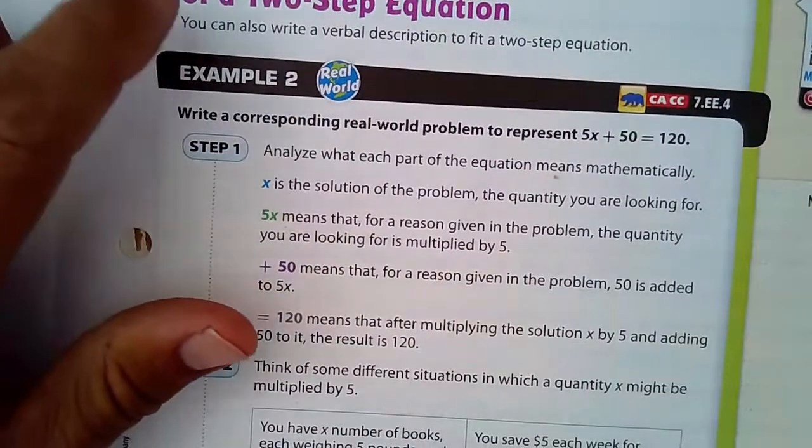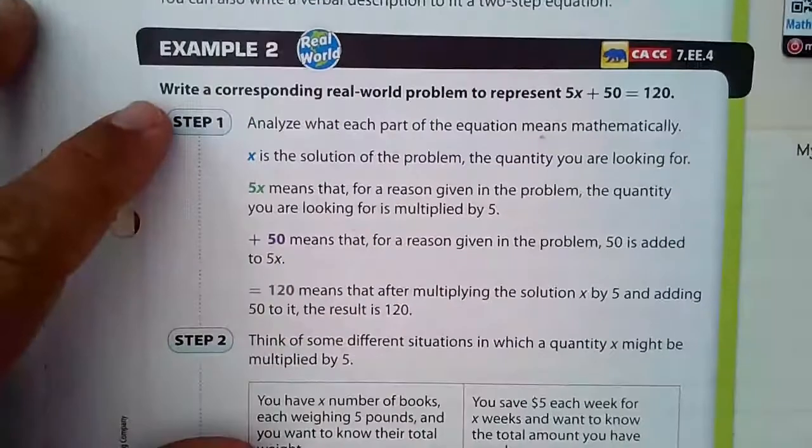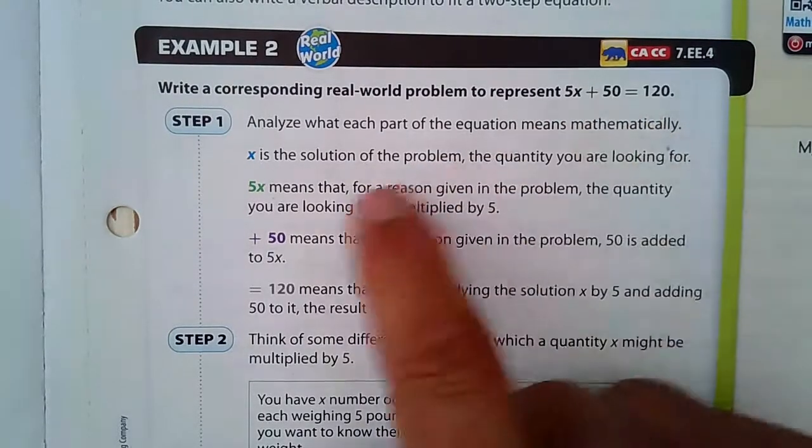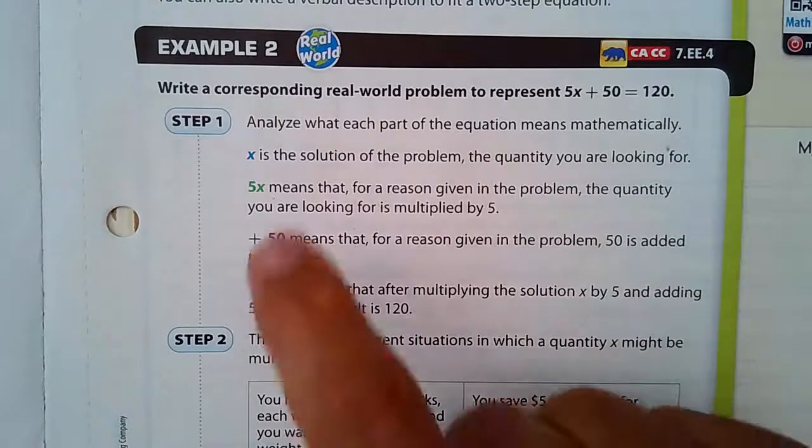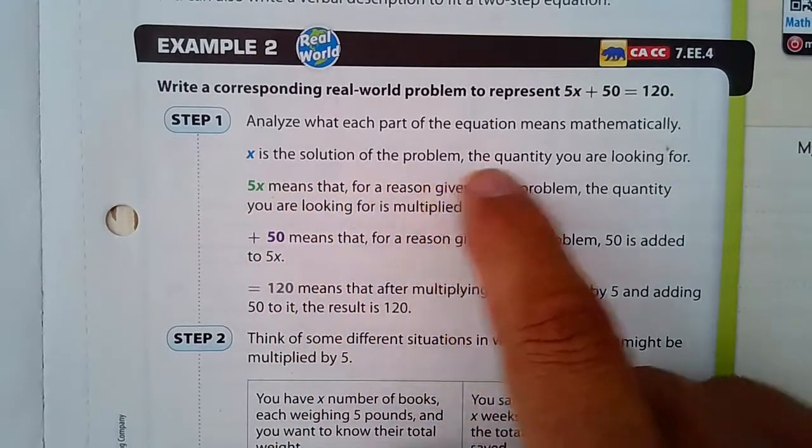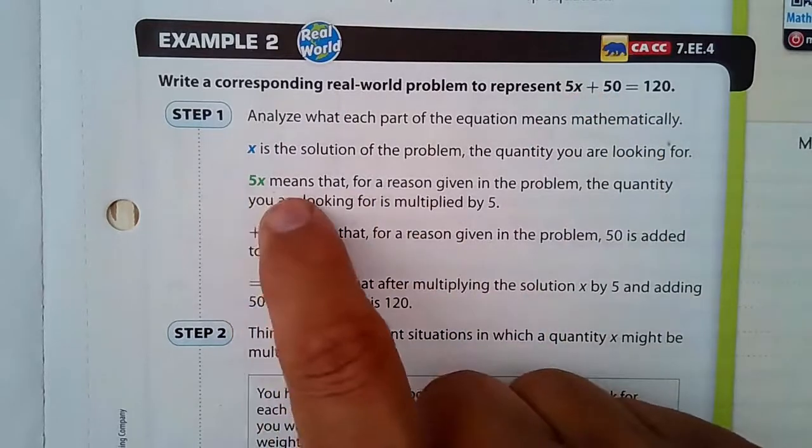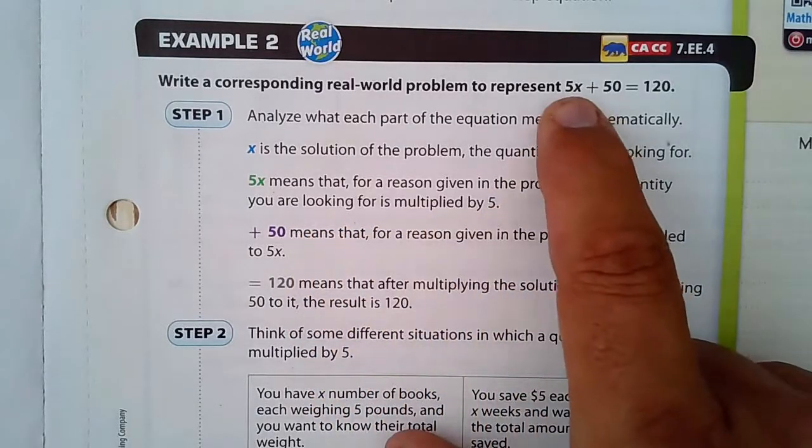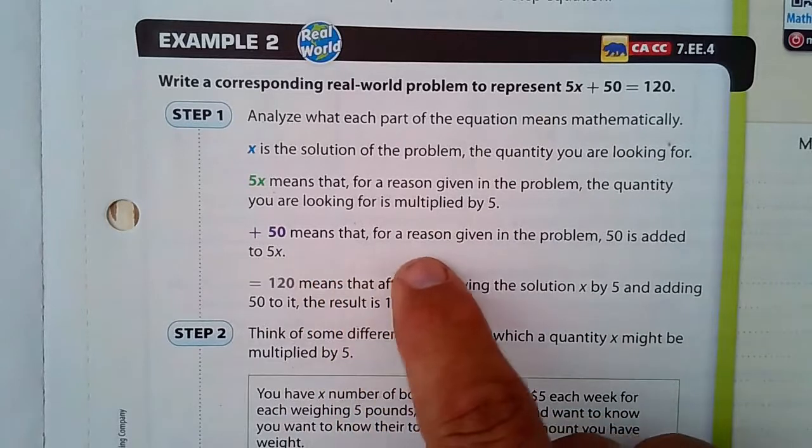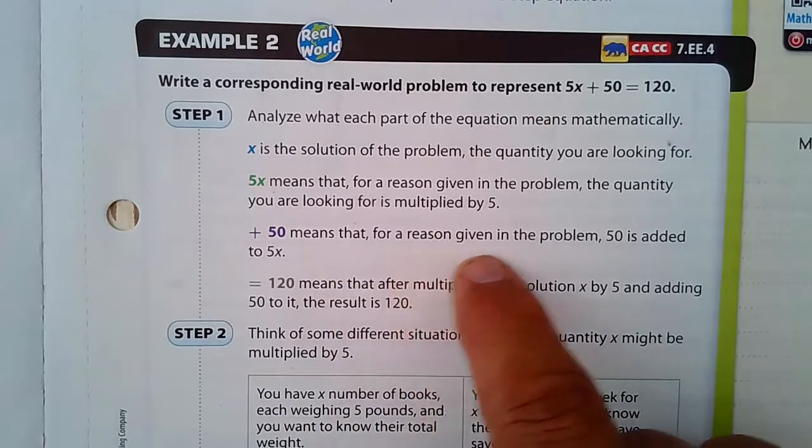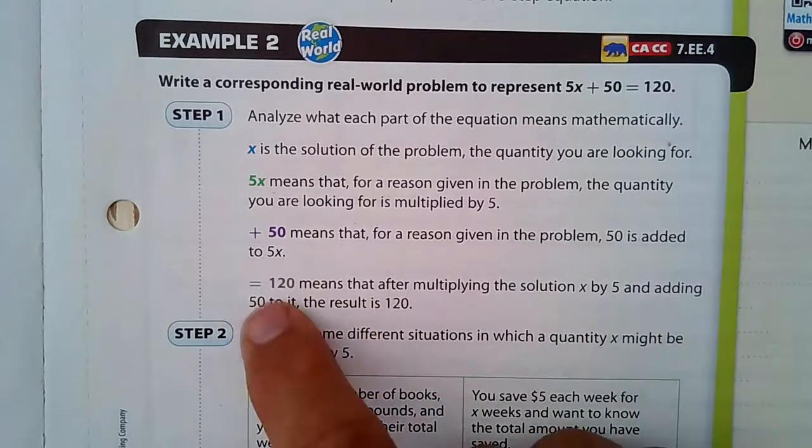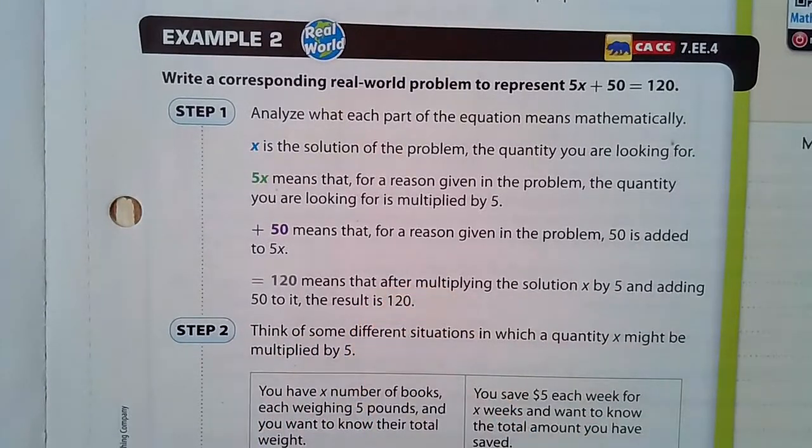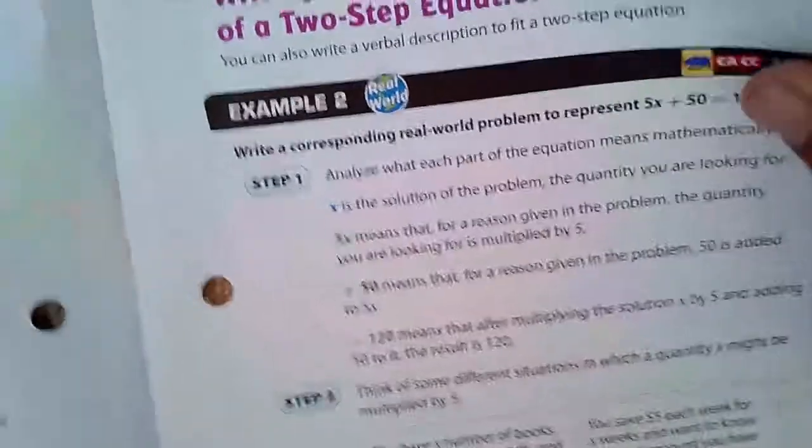Writing a verbal description of a two-step equation. Now we're going the opposite direction. We're given this equation and asked to make a word problem based on it. Let's take a look at 5x plus 50 equals 120. Let's analyze each part mathematically. x is the solution, the quantity you're looking for. 5x means that for a reason given in the problem, the quantity you're looking for is multiplied by 5. Plus 50 means 50 is added to 5x. And equals 120 means after multiplying the solution by 5 and adding 50, you have to get 120 as a result.